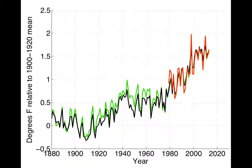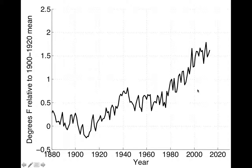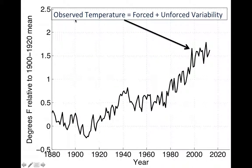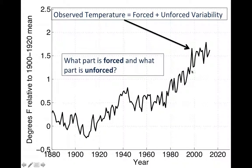The second point about the pause brings back the conversation about forced and unforced variability. Zooming back in to 1880–2013, I'm averaging all three temperature datasets into one line. Remember, the temperature we observe equals forced plus unforced variability — the forced component being things like increasing greenhouse gases (the movement of the man), and unforced variability being things like El Niños and La Niñas (the movement of the dog). We want to know how much of the temperature change over different periods is forced versus unforced.